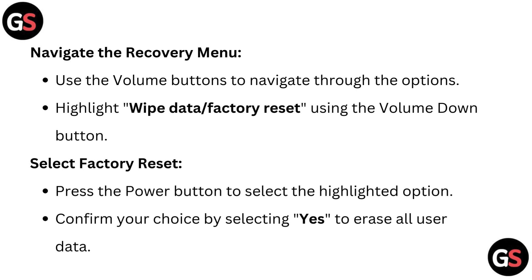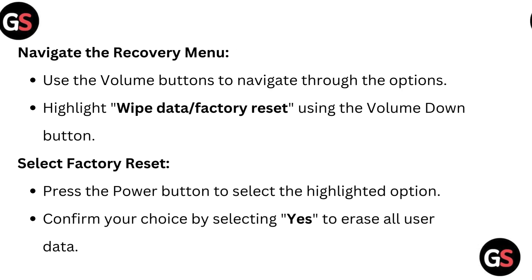Navigate the recovery menu. Use the volume buttons to navigate through the options, and highlight wipe data or factory reset using the volume down button. Select factory reset by pressing the power button to select the highlighted option. Confirm your choice by selecting yes to erase all user data.